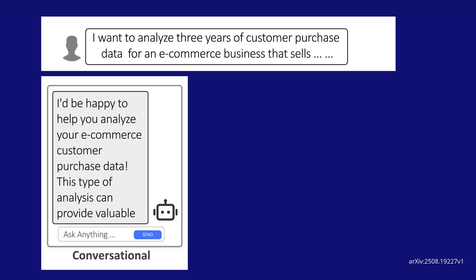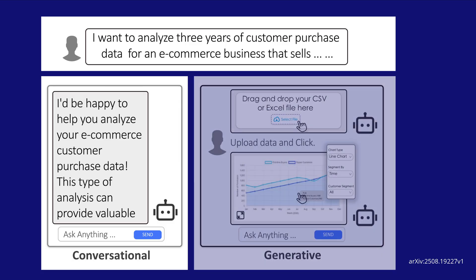Let's say you have here a mathematical or financial scenario — say, three years of customer purchase data for an e-commerce database. Either you have GPT telling you it's here to help you, or you go to Lovable or whatever to code your own app. But this can now be coded for you by an AI system.